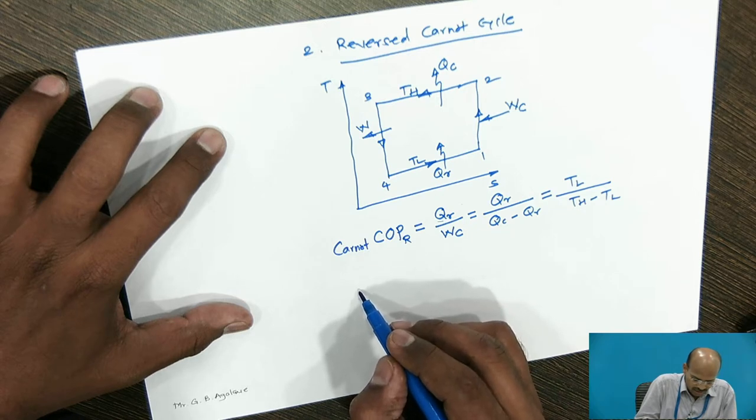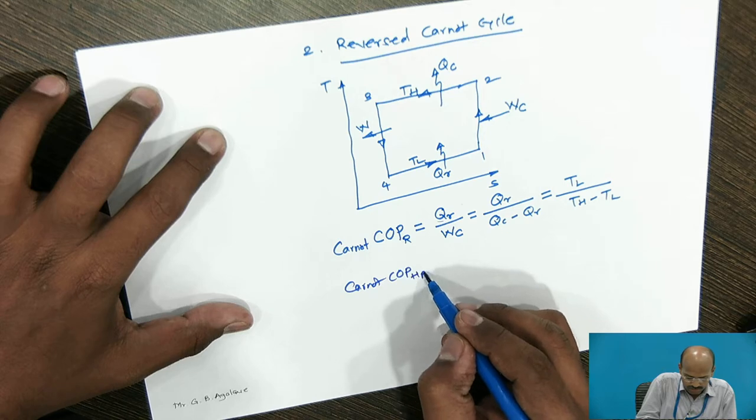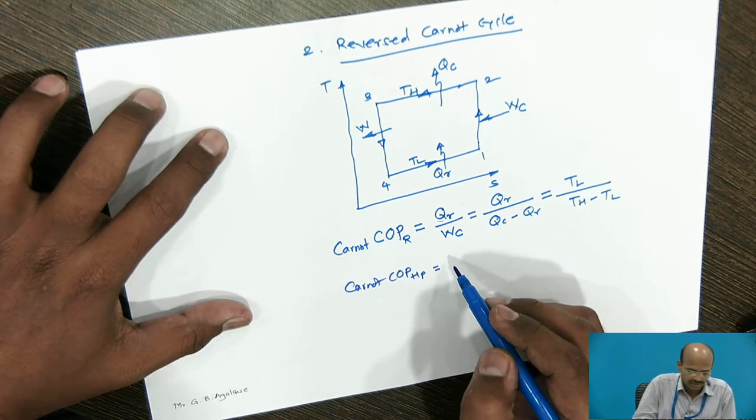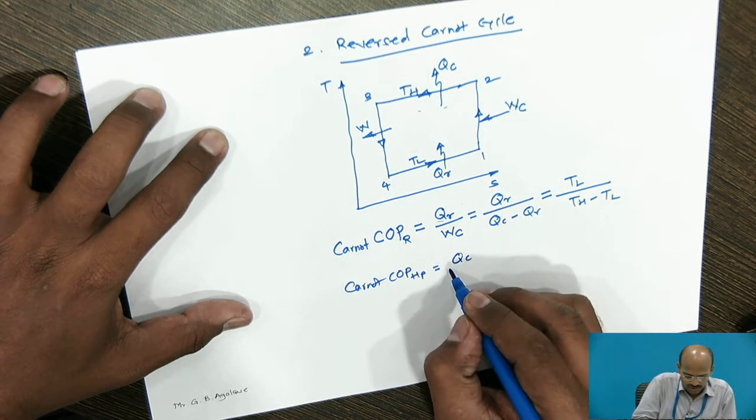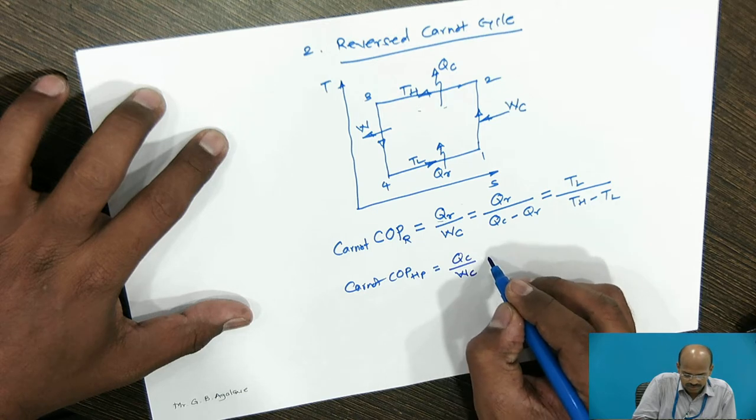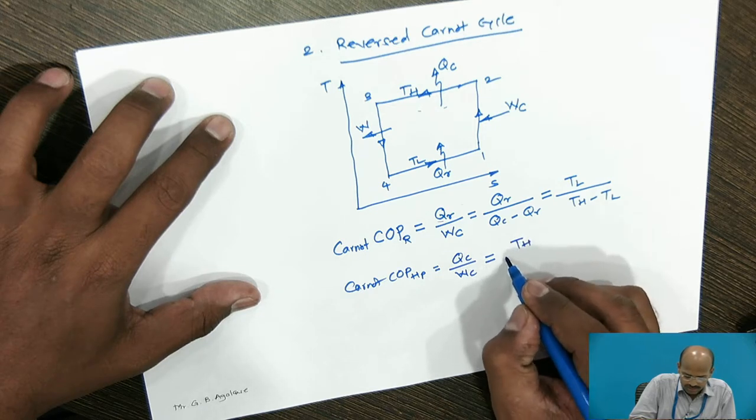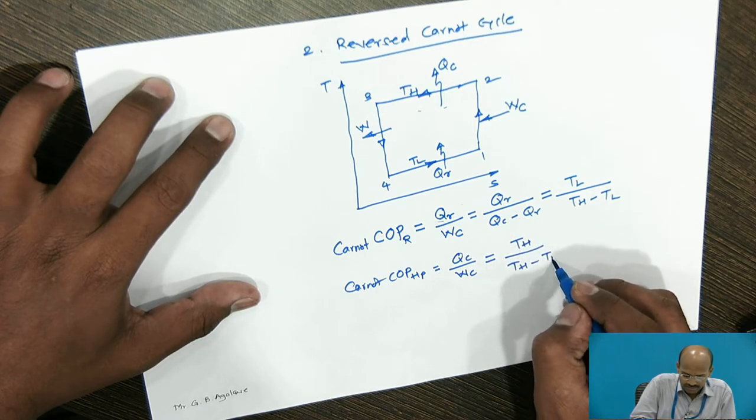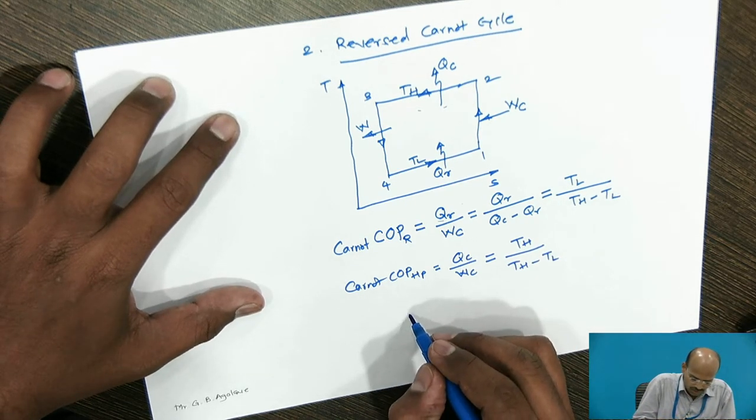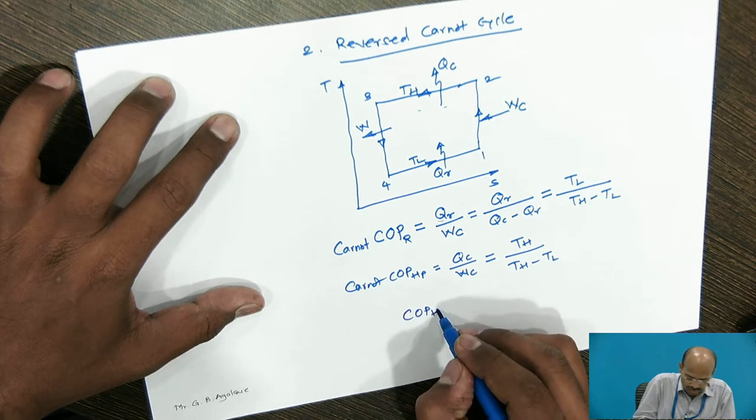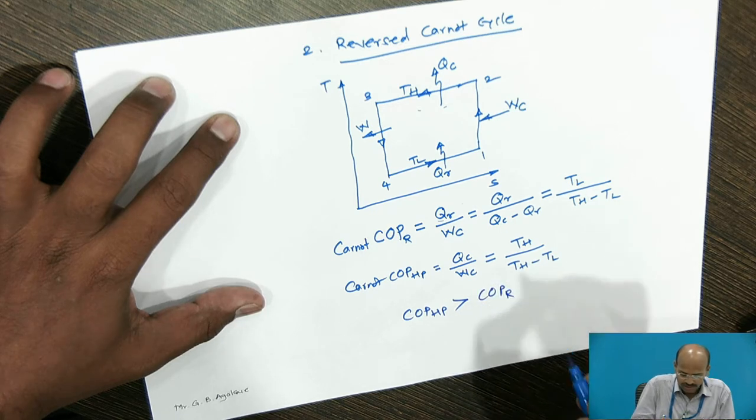Similarly, I can write Carnot COP for heat pump as now in the heat pump the desired effect will be the heat addition into the room. So, QC divided by same work will be required by the heat pump. It will be the ratio of TH divided by TH minus TL. Remember, the Carnot COP of heat pump is always greater than Carnot COP of the refrigerator.